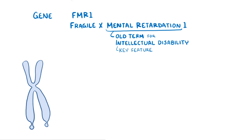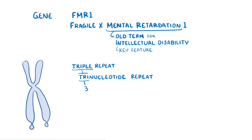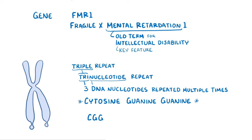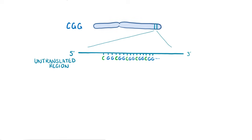The FMR1 gene has a triplet repeat, or tri-nucleotide repeat, which means that a group of 3 DNA nucleotides is repeated multiple times in a row. In FMR1, it's the nucleotides cytosine, guanine, and guanine, or CGG. These CGGs are found in the 5' untranslated region of FMR1.